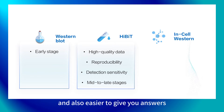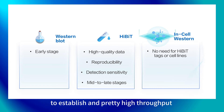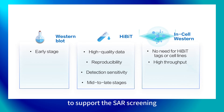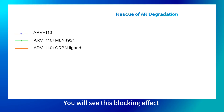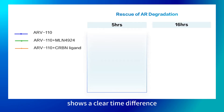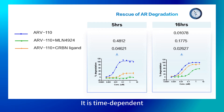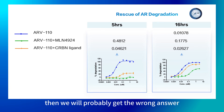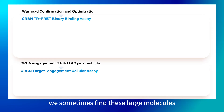The Western blot is also easier to give you answers if you don't want to modify the protein of interest with a HiBiT tag or spend time and money generating cell lines. You could also consider the in-cell Western assay, which is straightforward to establish and has high throughput to support SAR screening. Taking AR regulation as an example, you can see a clear time difference, which reminds us that PROTAC function is more like a kinetic function — it is time dependent. If we don't choose the assay time points properly, we will probably get the wrong answer.